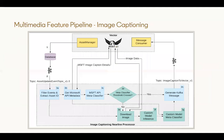An example of a nearline processing system is image captioning. Upon an image upload, we asynchronously generate an image caption using either the Microsoft API or a custom TensorFlow captioning model, which has already been trained. When a new image is uploaded and stored in Ambry, a Kafka event is fired to signal that the image has been uploaded.